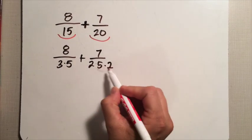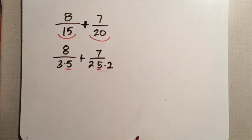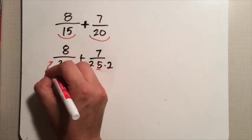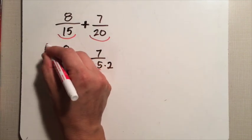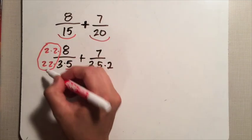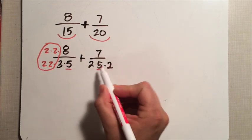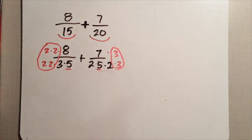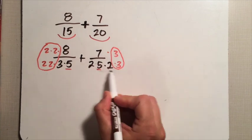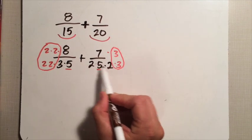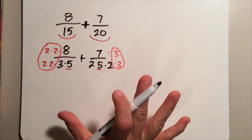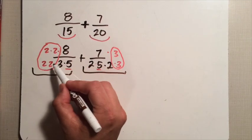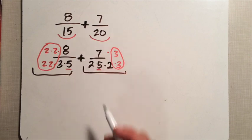I'm trying to get the same factors in both denominators. They both have a five, which is good. This denominator has two factors of two; this denominator doesn't have any factors of two. You can multiply two times two, or multiply four — same thing. So four top and bottom gives me two times two times three times five. I'm missing a three in the other denominator, so I multiply top and bottom by three. Now both denominators are two times two times three times five — same factors, same number.